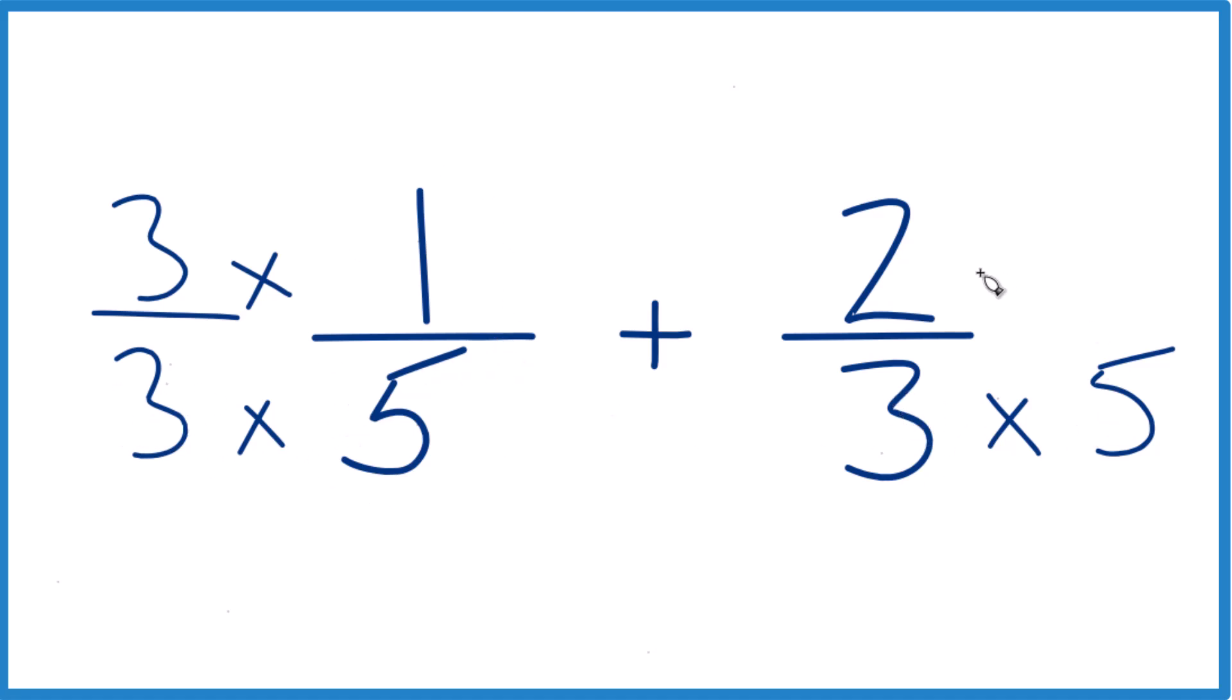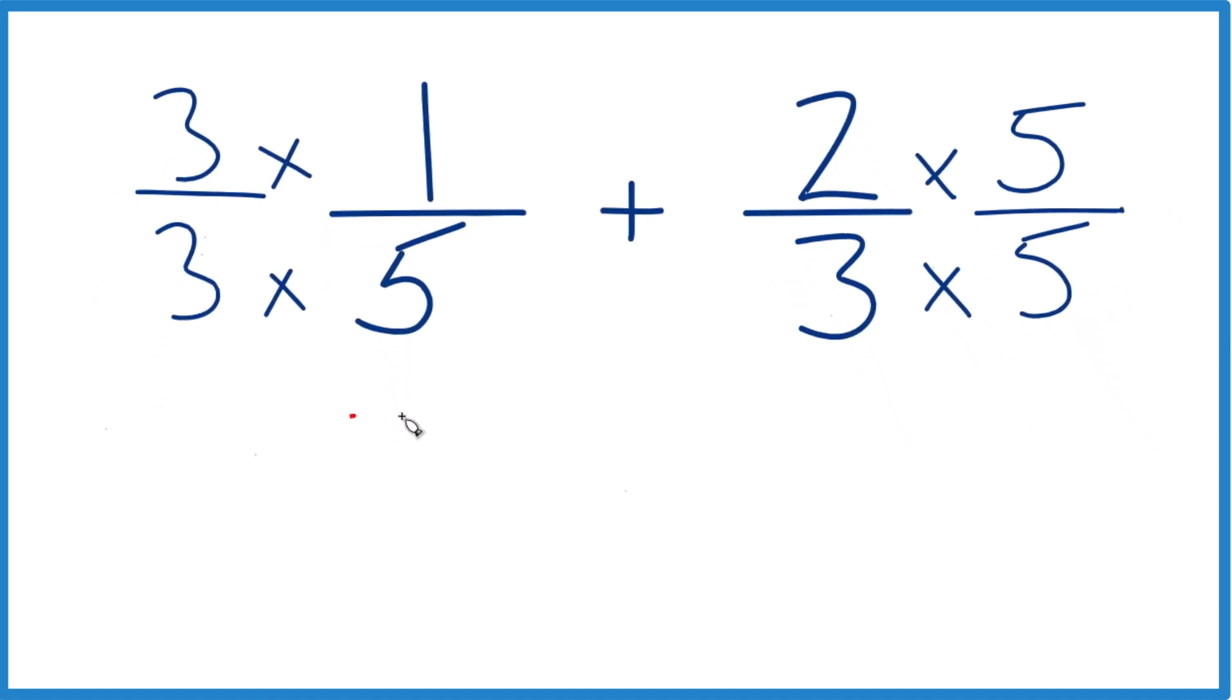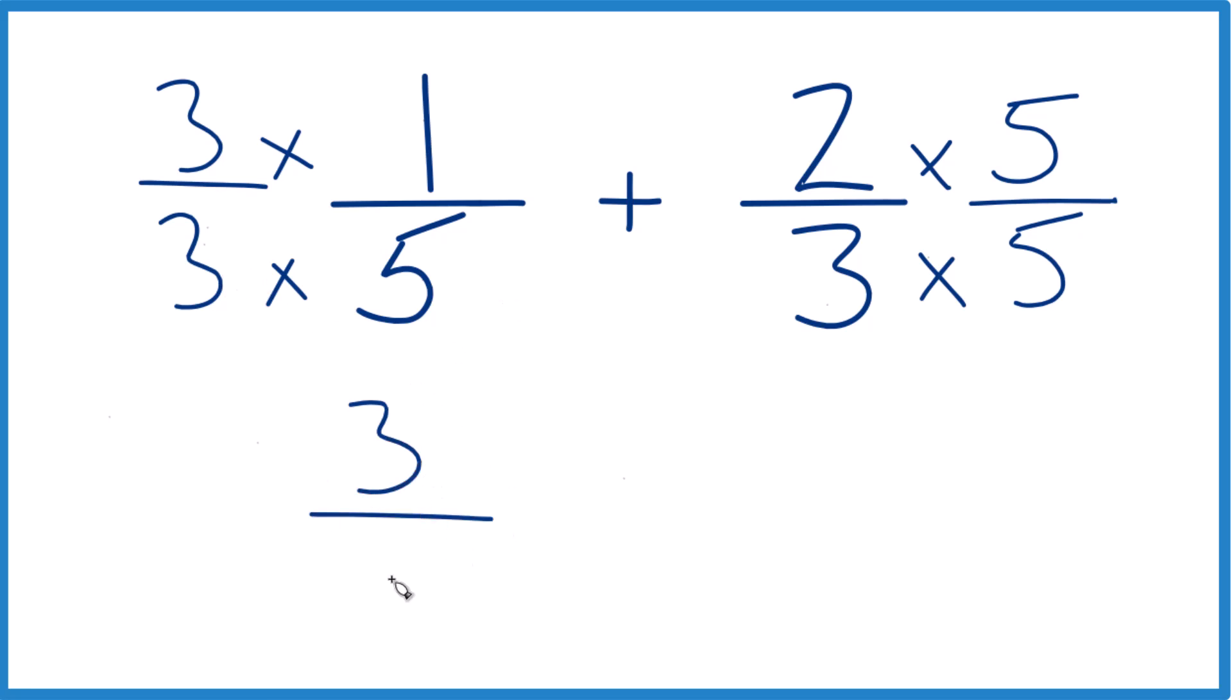Over here, let's multiply two times five, and now three times one, that's three. Three times five, that's 15. And three-fifteenths, that's an equivalent fraction to one-fifth, they have the same value.